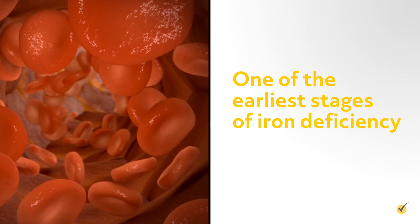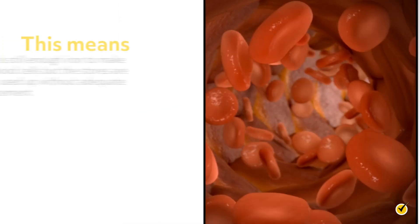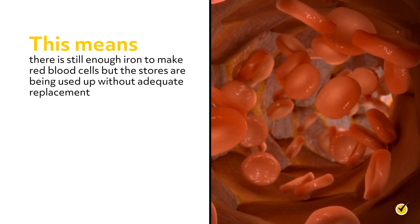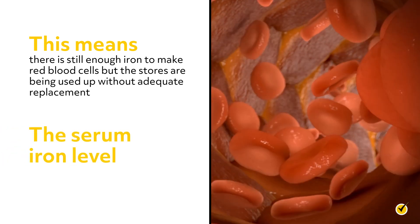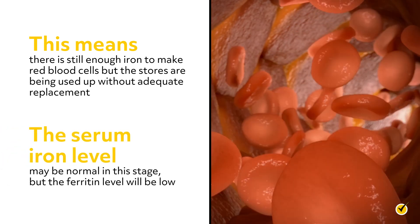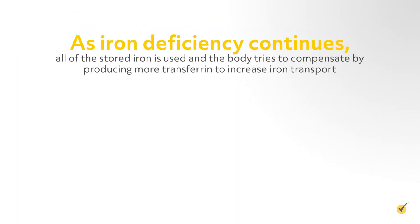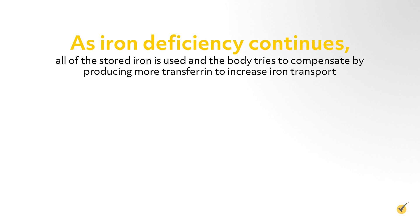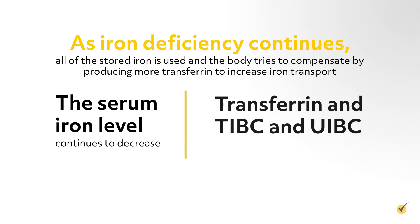One of the earliest stages of iron deficiency is the slow depletion of iron stores. This means there's still enough iron to make red cells, but the stores are being used up without adequate replacement. The serum iron level may be normal in this stage, but the ferritin level will be low. As iron deficiency continues, all of the stored iron is used and the body tries to compensate by producing more transferrin to increase iron transport. The serum iron level continues to decrease, and transferrin, TIBC, and UIBC increase.